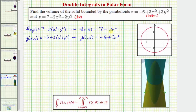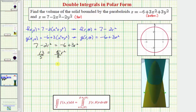Now we need to find the intersection of these two paraboloids, which will help us determine our region of integration. We'll solve this as a system of equations, setting seven minus two r squared equal to negative six plus three r squared. Adding two r squared and six to both sides gives us 13 equals five r squared. Dividing both sides by five: r squared equals 13 fifths. Taking the square root, r equals plus or minus the square root of 13 fifths, but either gives us a circle in the xy plane with radius square root of 13 fifths. So we'll just use r equals the square root of 13 fifths, which is already graphed here on the xy coordinate plane.